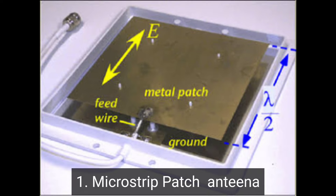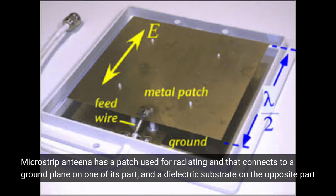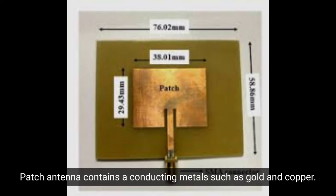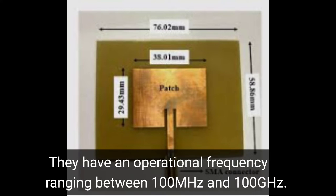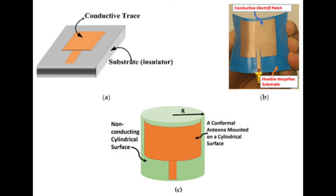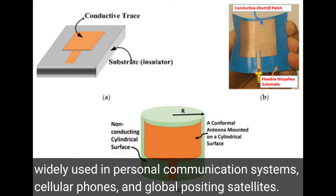Microstrip Patch Antenna. A microstrip antenna has a patch used for radiating that connects to a ground plane on one of its parts and to a dielectric substrate on the other side. Patch antennas contain a conducting metal such as gold or copper. They have an operational frequency ranging between 100 megahertz to 100 gigahertz. Some benefits of microstrip antennas are low fabrication cost, low volume, and less weight. Patch antennas are widely used in personal communication systems, cellular phones, and global positioning satellites.